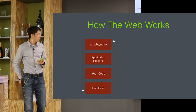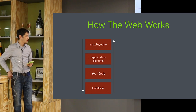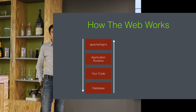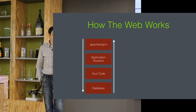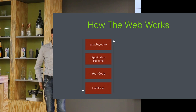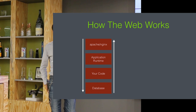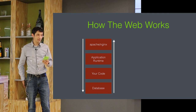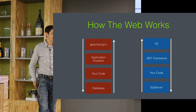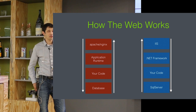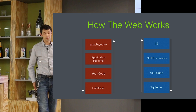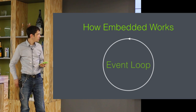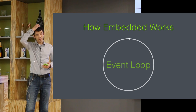If you've worked on the web, most web software looks something like this: a web request comes in, goes through Apache or Nginx, yields to an application runtime — if you're using Rails that's Ruby — you run your application code, hit the database, get the response back, generate a response, and ship it out. On .NET it's the same: IIS, the .NET framework, your code, SQL Server, and back up the chain.